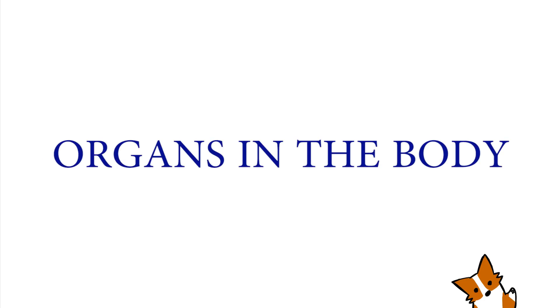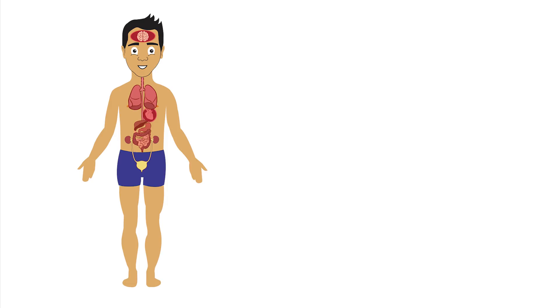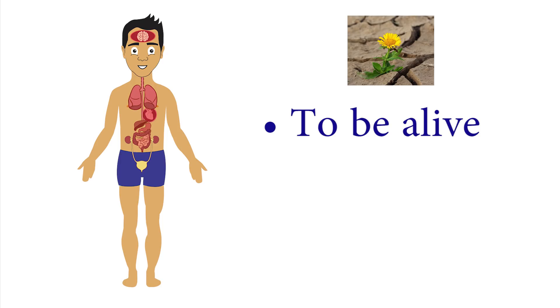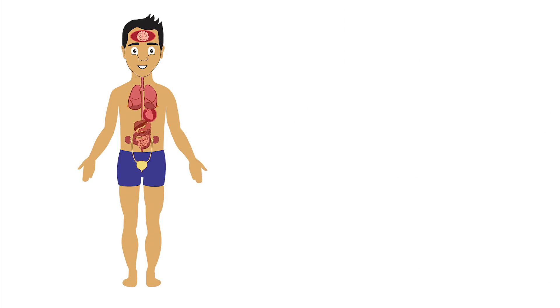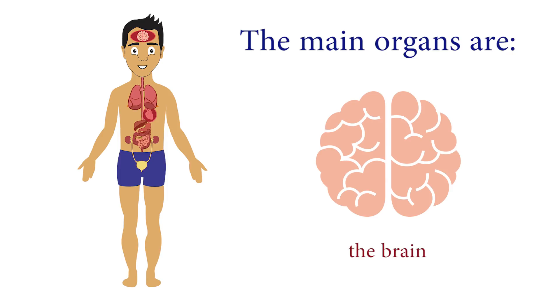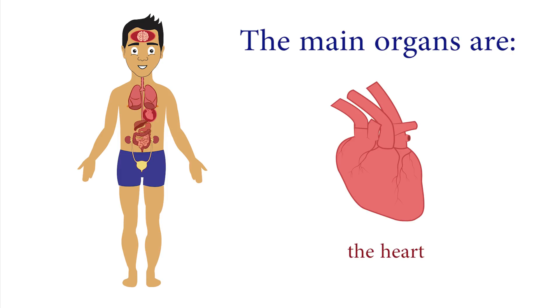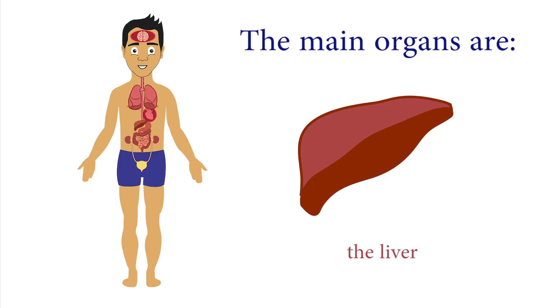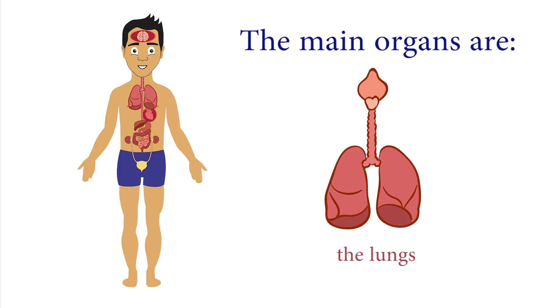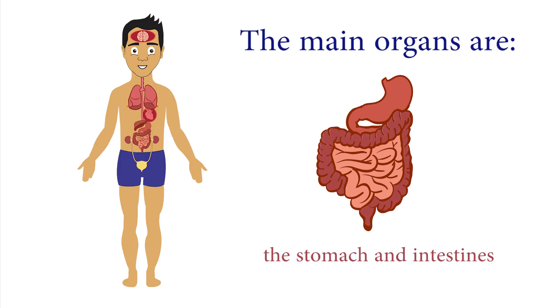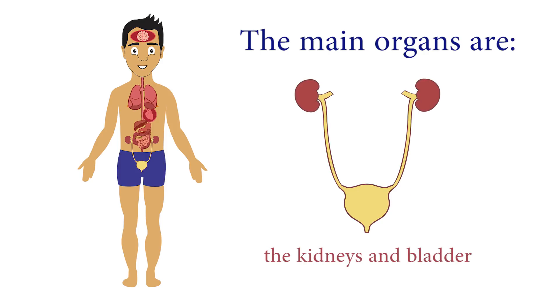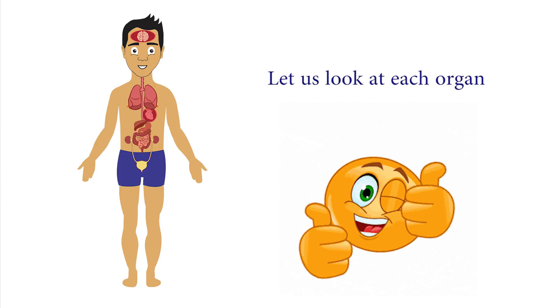Hi kids, today we are going to learn about the organs in the body. Organs perform vital functions to enable us to be alive and reproduce. The main organs include the brain, the heart, the liver, the lungs, the stomach and intestines, and the kidneys and bladder. Let us look at each organ, beginning with the heart.